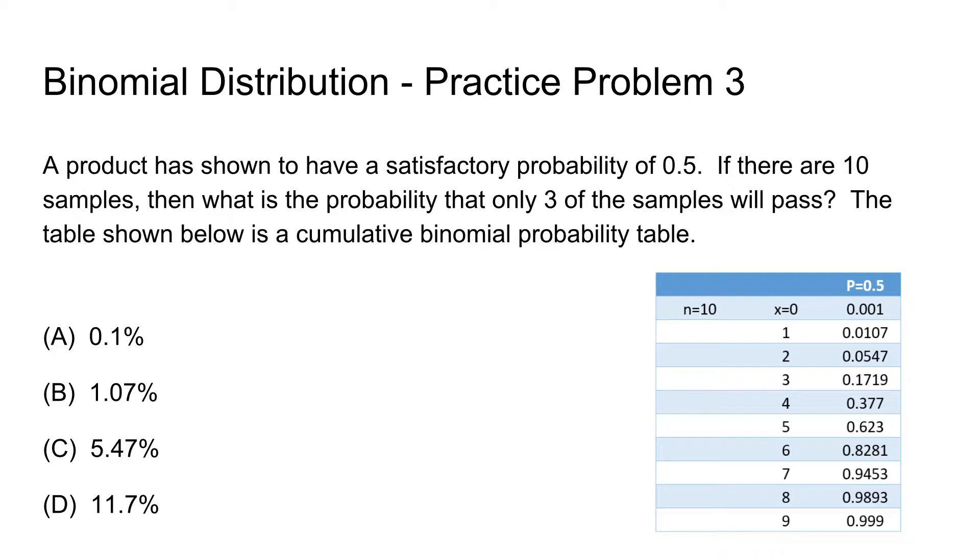And I like to start off with identifying the correct column. So you check your individual probability of success and that will correspond to your p-value. And in this case, it's 0.5. So we know that we are in this column.